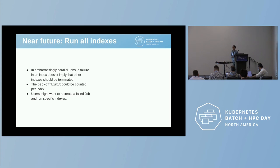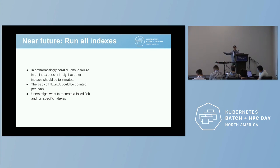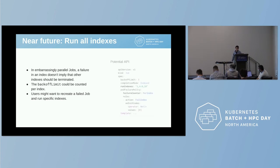So those are all the features we've been working on — most of them are finished, one is ongoing. In the near future, we want to add the capability to index jobs where you control the backoff per index, and you can basically guarantee that all your indexes run at least once or up to the limit. You can even say: if this index fails, I just want to fail this index, but all the other indexes can continue running. We haven't started the design yet, but this is kind of the potential API.